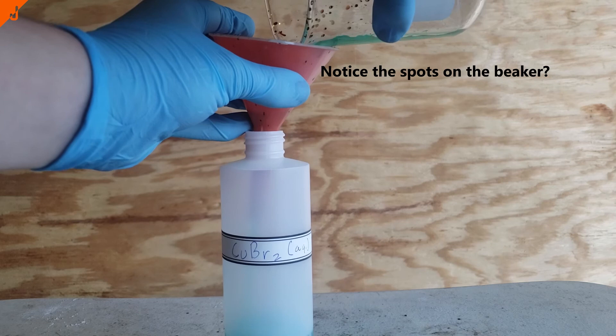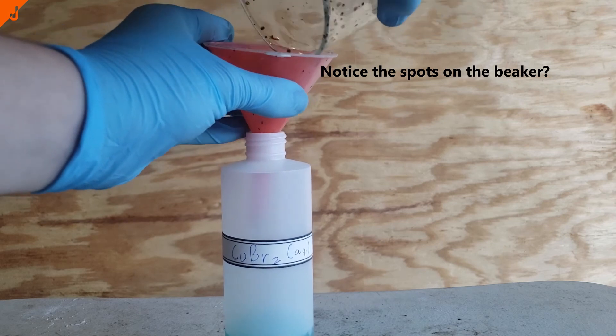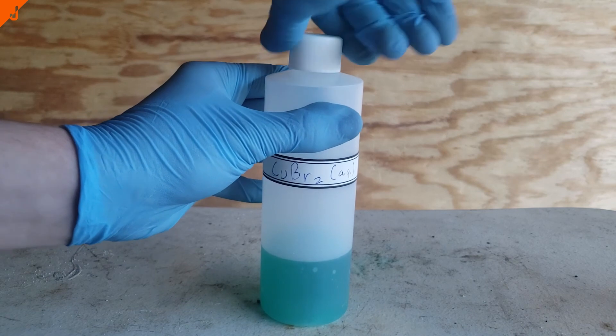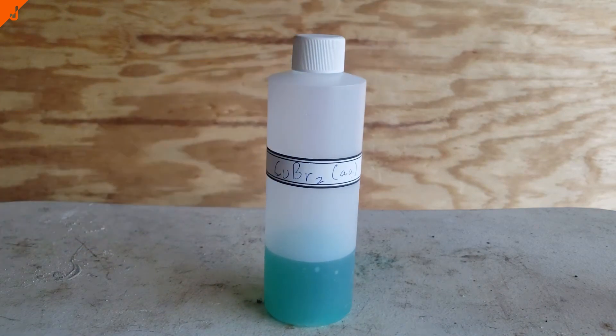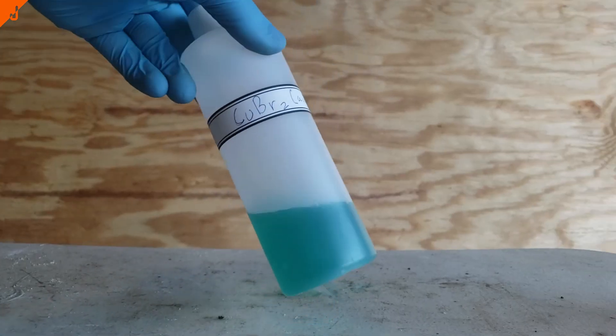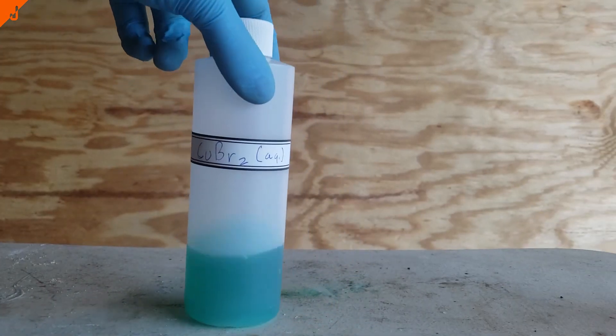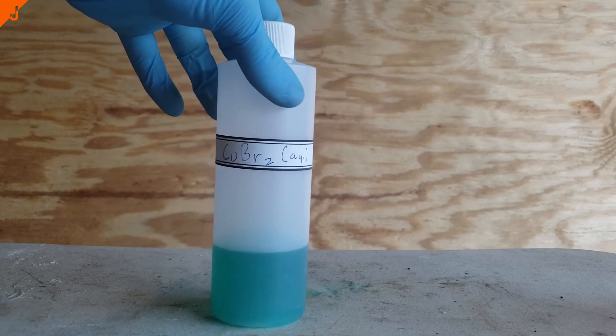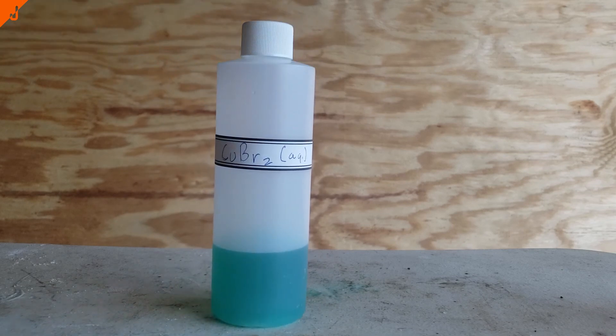Finally, once it was all done filtering, I decided to just bottle it as is. And this is because copper-2-bromide is actually, apparently, pretty deliquescent. So I really didn't want to have to deal with crystallizing it, and Wikipedia actually has some pretty crazy methods of drying it out all the way with phosphorus pentoxide.